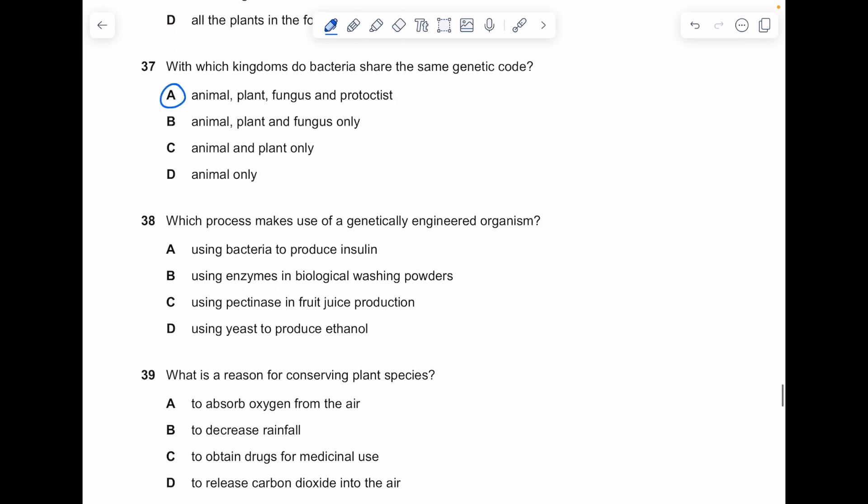Which process makes use of a genetically engineered organism? We use that to genetically modify bacteria to make human insulin. The answer here again is A.